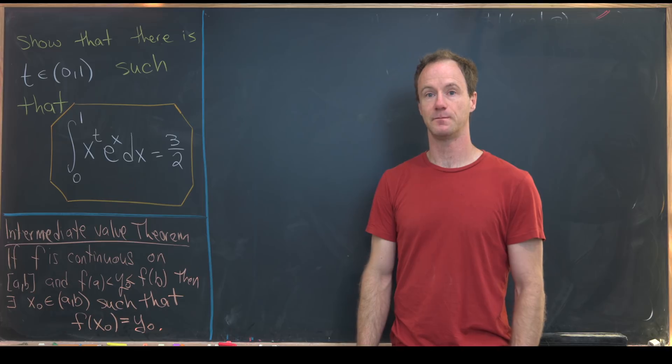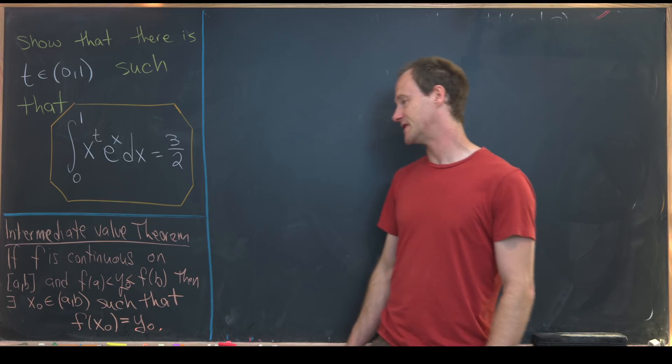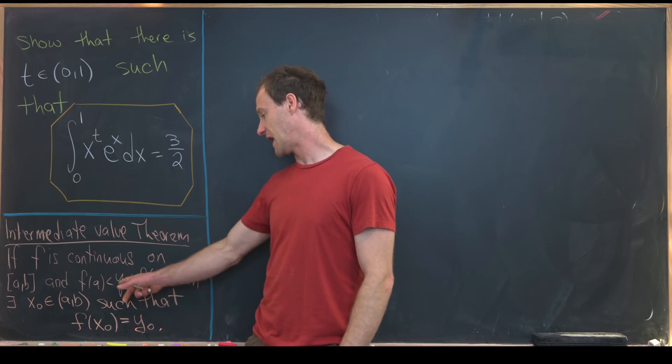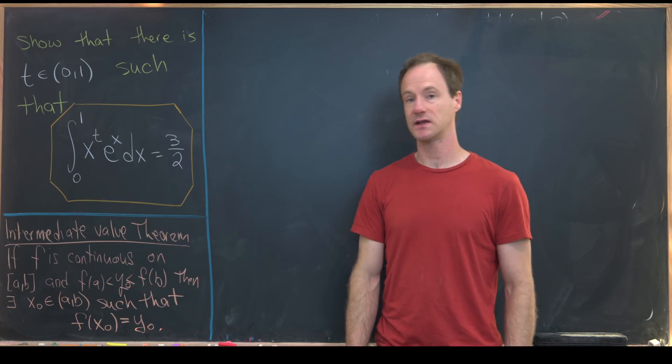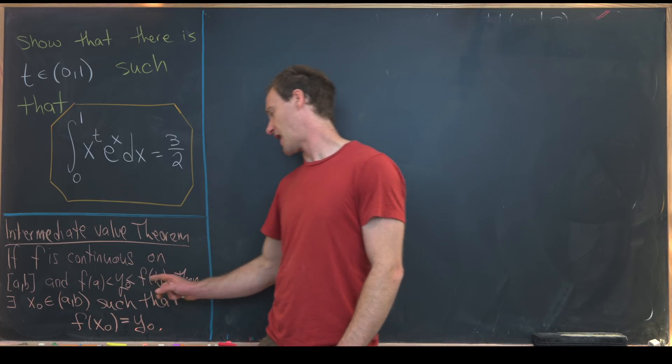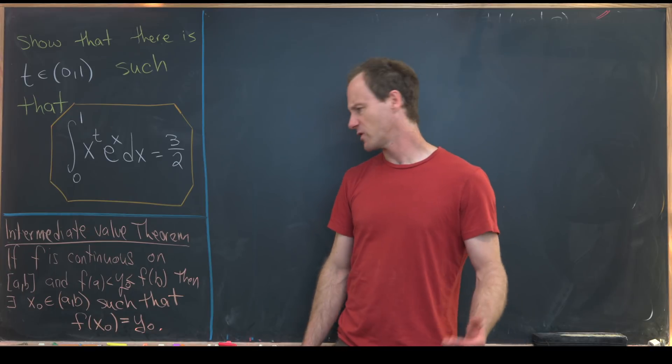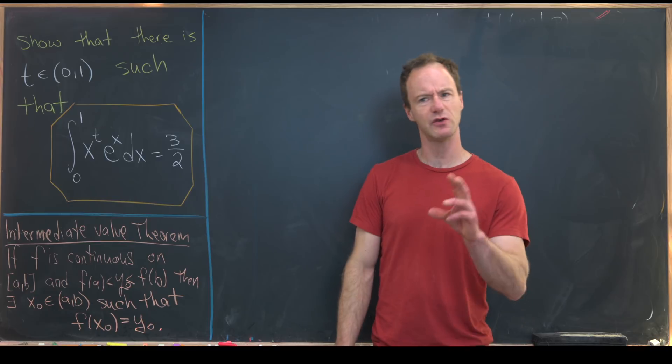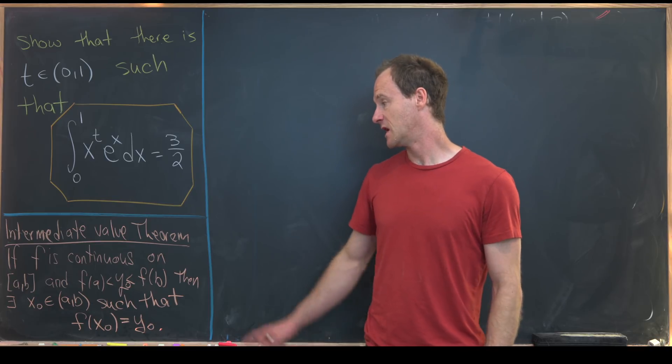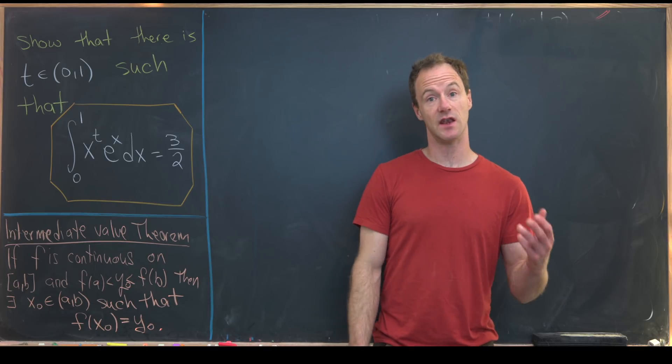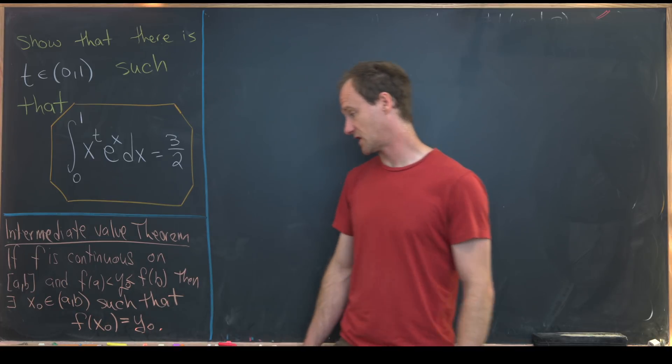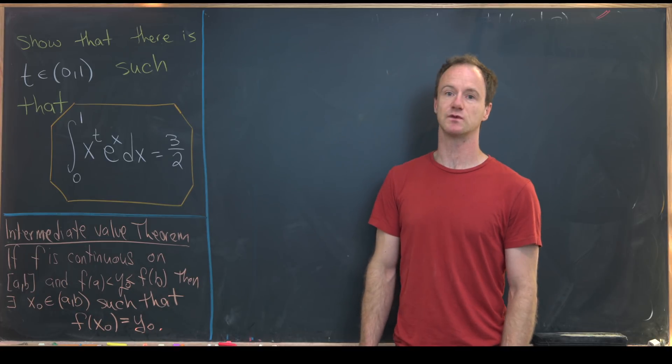So like I said, we're going to use the intermediate value theorem, which says if f is continuous on a closed interval a, b, and we have a number y naught, which is between f of a and f of b. I've written it as f of a is less than y naught, which is less than f of b, but you could switch that if you needed to. Then there exists another number, which I'll call x naught, on the open interval a, b, such that f of x naught equals y naught.